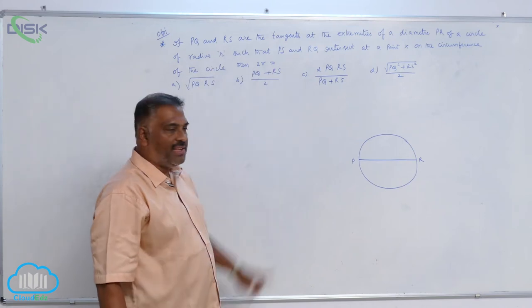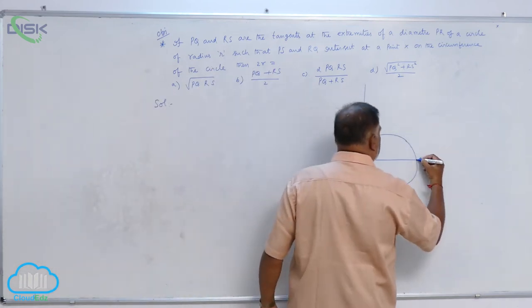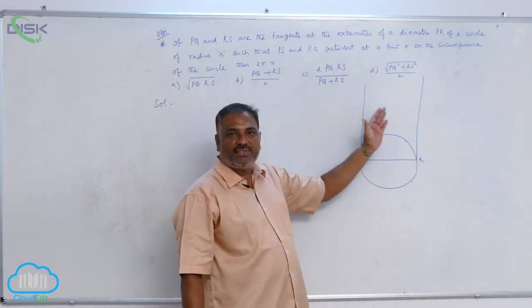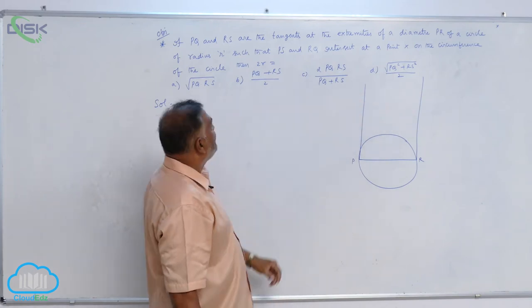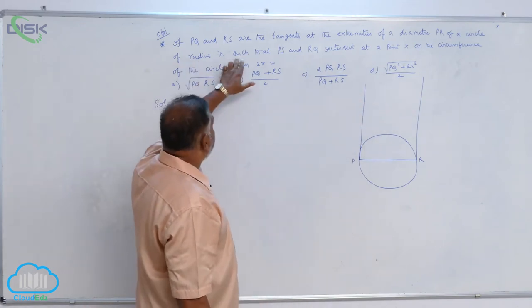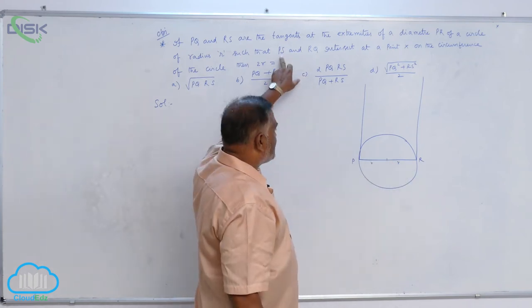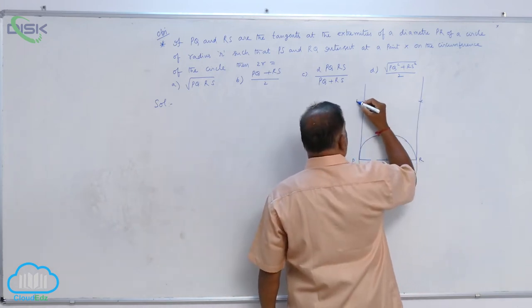PQ and RS are tangents. So, this is going to be one tangent, this is going to be another tangent. We have to locate points Q and S and the radius R is given in the circle. Now, locate the point here S and here it is Q.